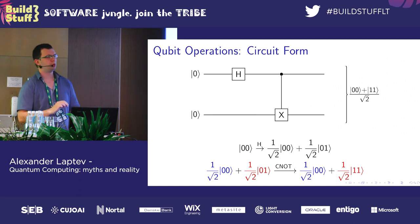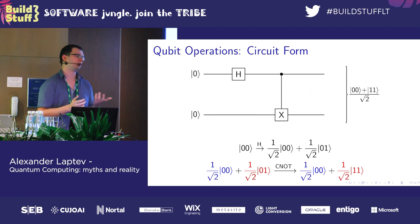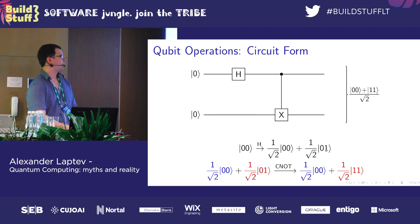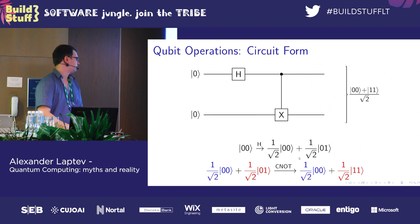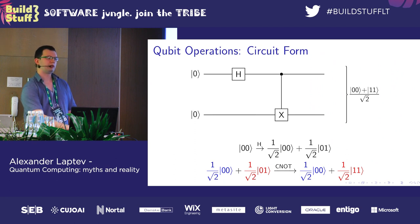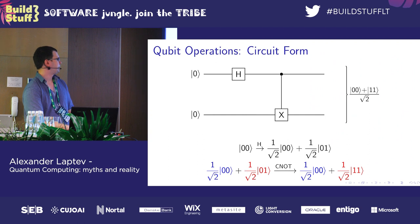The next step is a so-called controlled operation. 'Control' means that the operation over a qubit is applied only for substates where the control qubit is in state one. After the Hadamard gate, in one substate the top qubit is zero and in the other it is one. Applying the controlled X gate, we ignore the substate where the top qubit is not one — it stays the same. In the other substate, where the top qubit is one, we change the bottom qubit's zero to one.